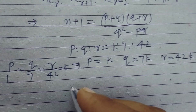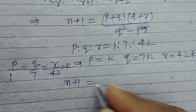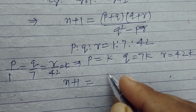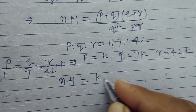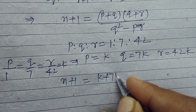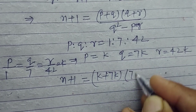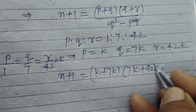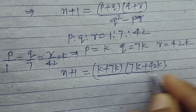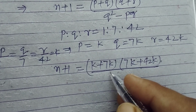Putting these values we get 1 plus N equal to (P plus Q)(Q plus R) over Q squared minus PR, which gives us K times (7K plus 42K) upon Q squared.